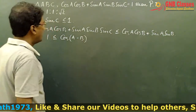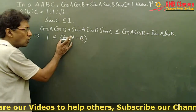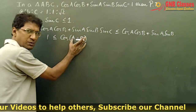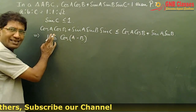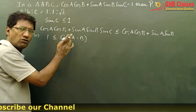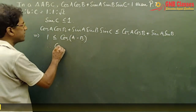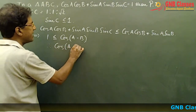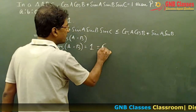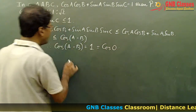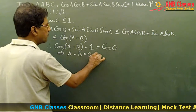cos(A-B) is an angle, so cos of that cannot exceed 1, because cosθ always lies between -1 and 1. Therefore cos(A-B) can take only the value 1. That means cos(A-B) = cos0, so A-B = 0.